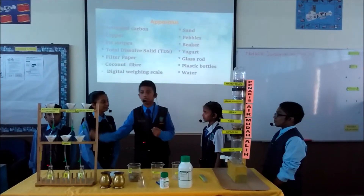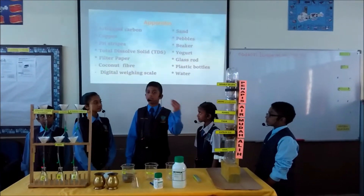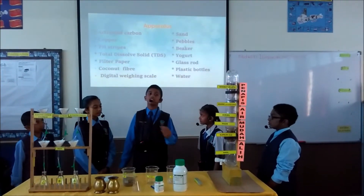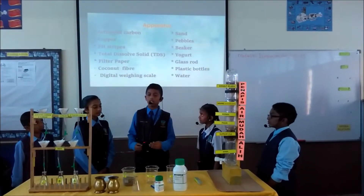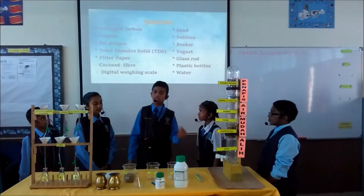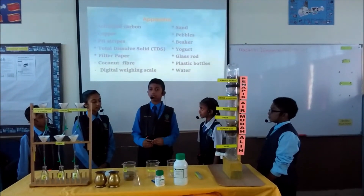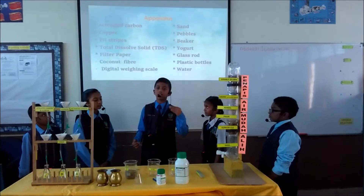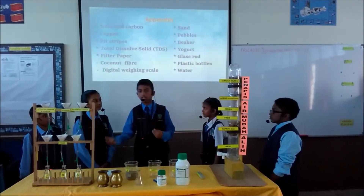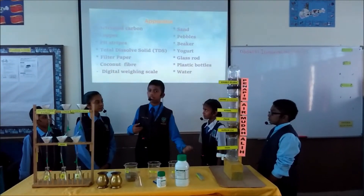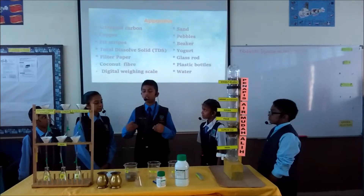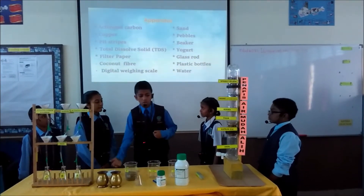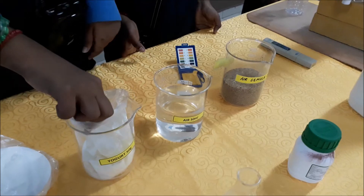This experiment follows a specific procedure. Firstly, we add yogurt and food coloring to the water solution. Next, we test the pH level of the water from each solution and record the data.